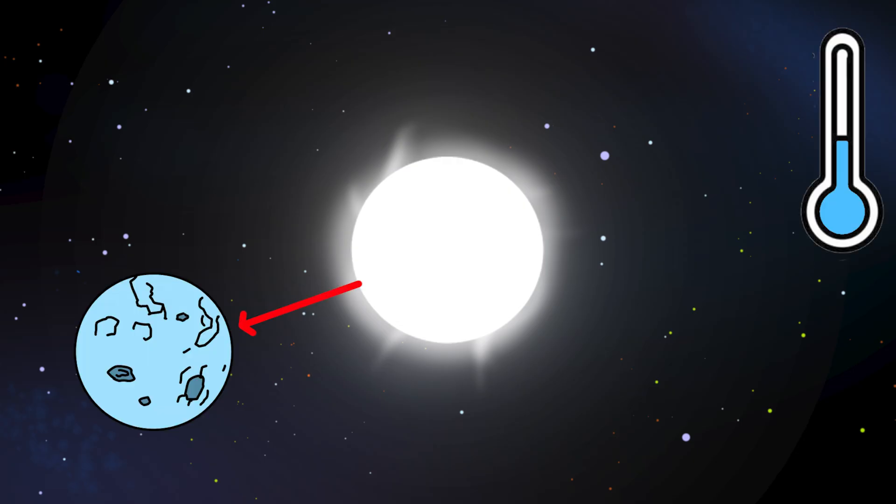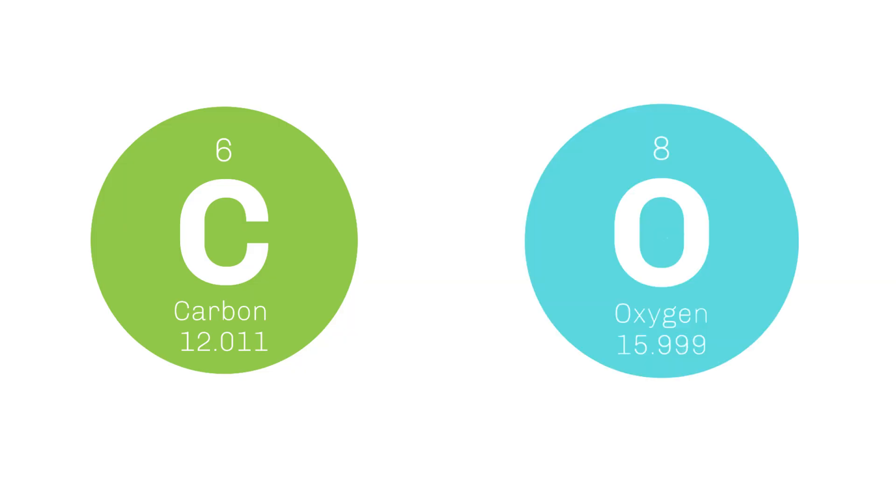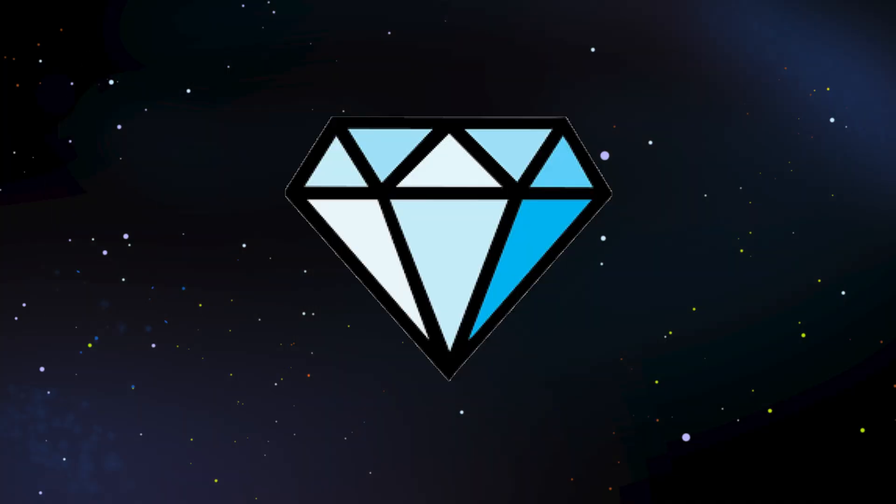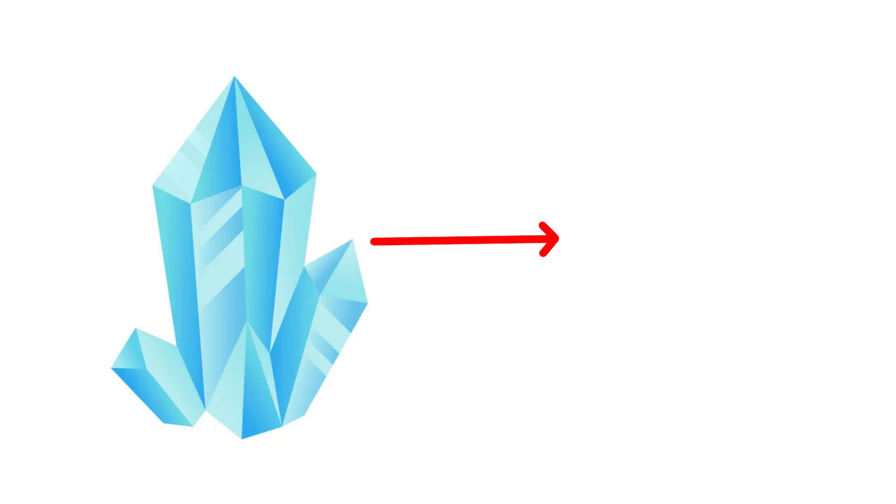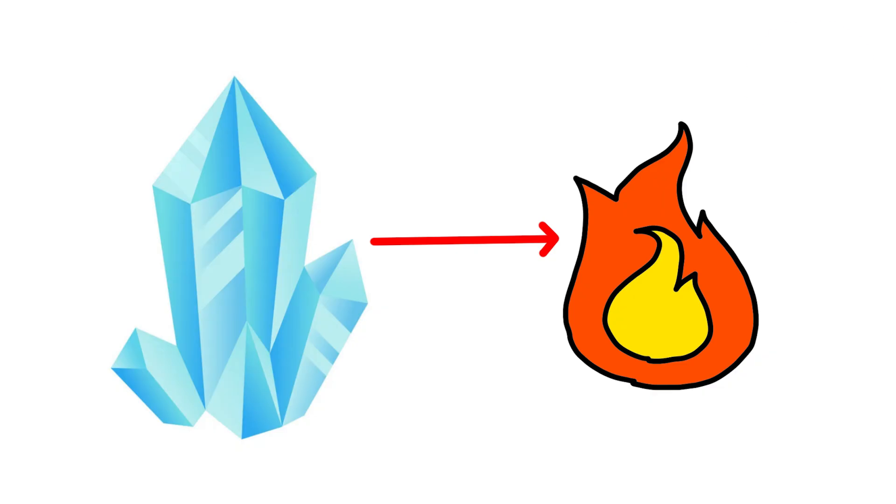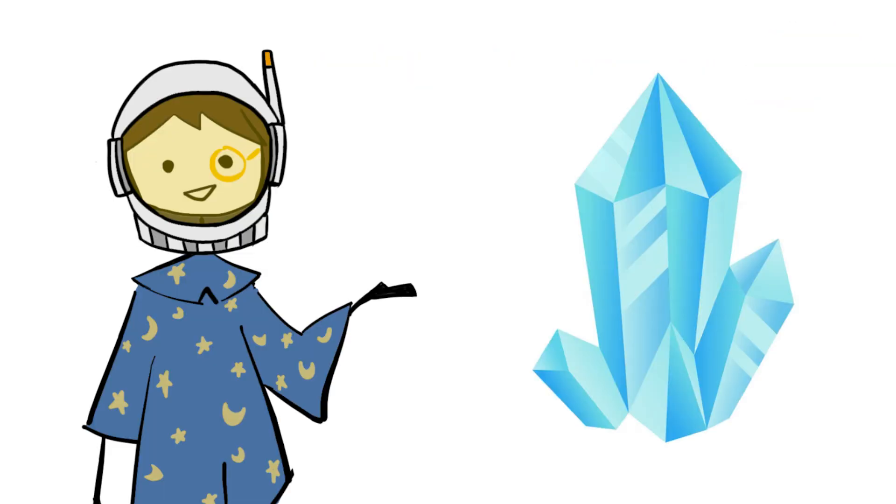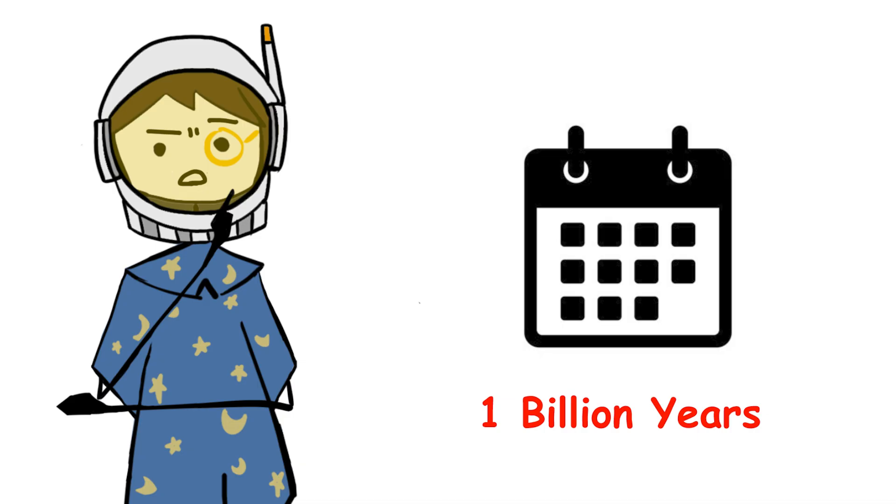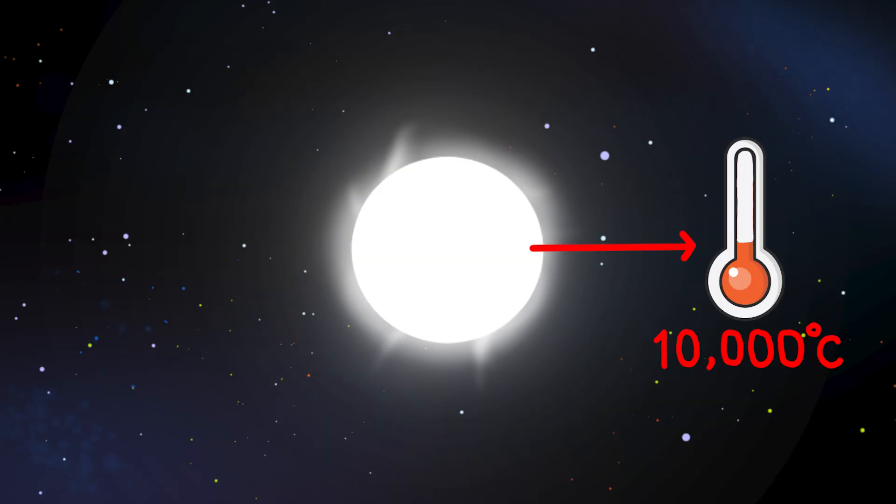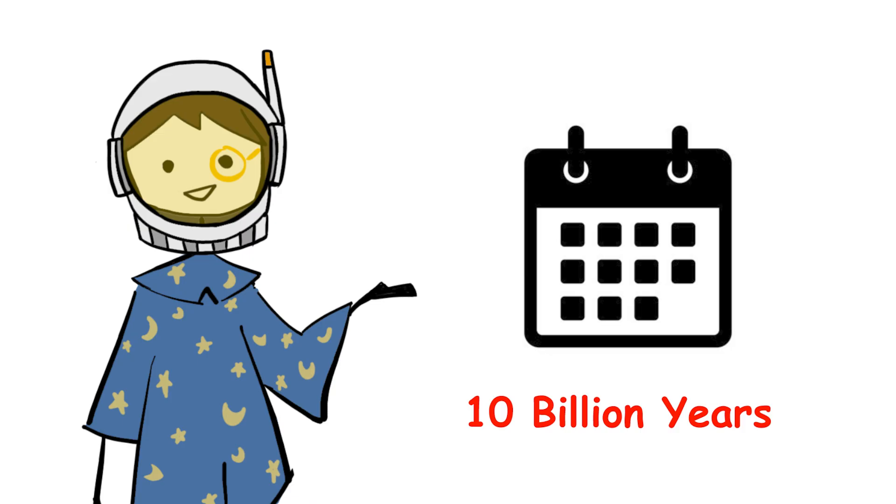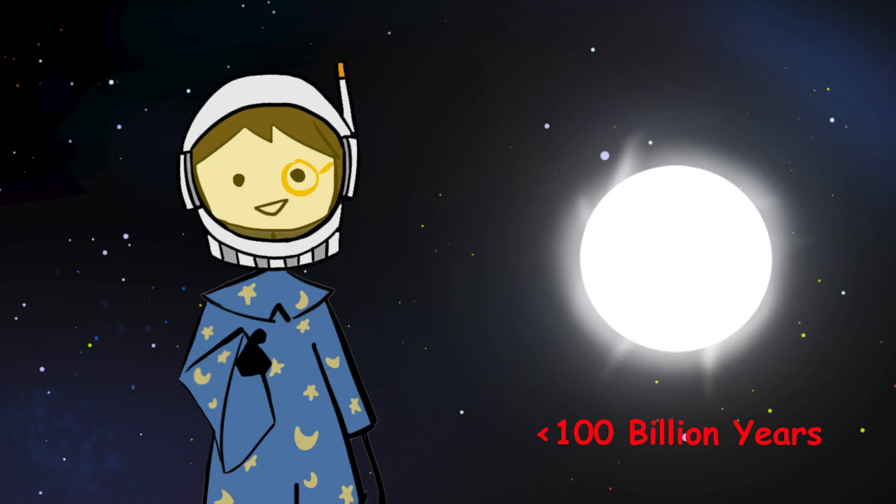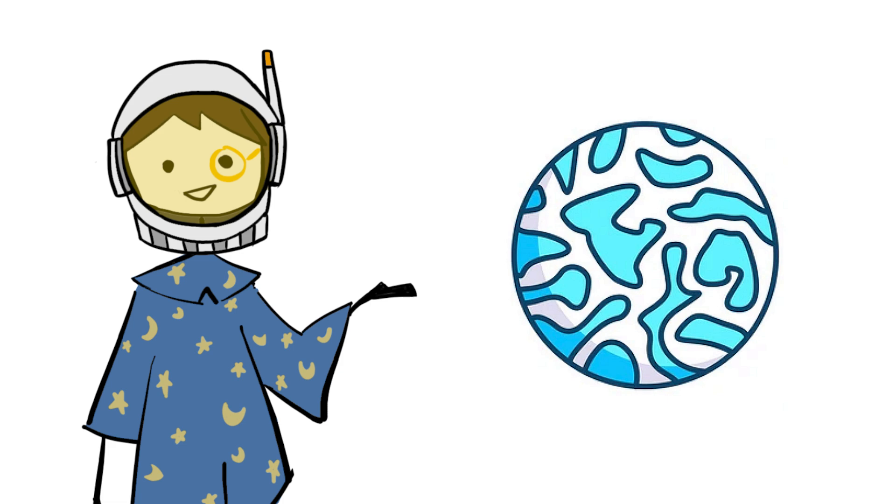As the white dwarf cools, its interior crystallizes. Carbon and oxygen atoms arrange themselves into a lattice structure. The Sun's core becomes a giant diamond. This crystallization process releases a small amount of latent heat, briefly slowing the cooling rate. But the white dwarf continues to fade. After one billion years, its surface temperature drops to 10,000 degrees Celsius. After 10 billion years, it becomes a dim red ember. The white dwarf will take more than 100 billion years, longer than the current age of the universe, to cool to the temperature of the cosmic microwave background.